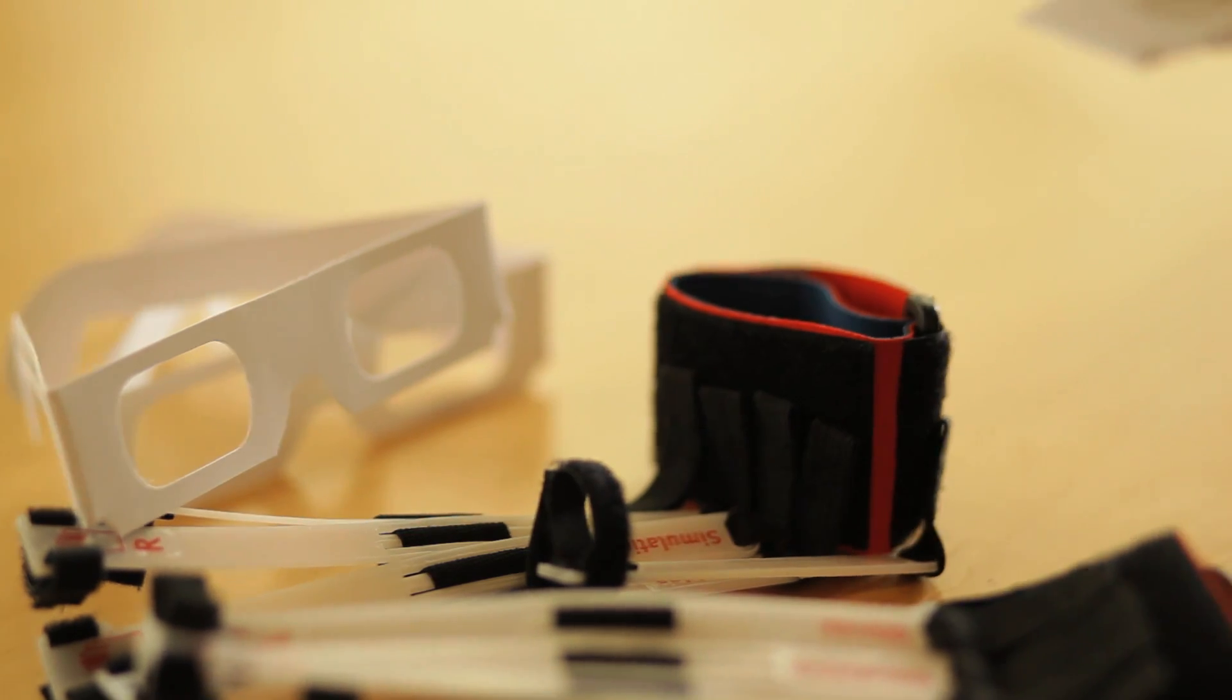These gloves and glasses simulate reduced ability of the hands and of the eyes. Now the hands and eyes are used to interact with almost everything you see and feel in the world. So this includes things like technology products, packaging, doors, anything in the built environment.